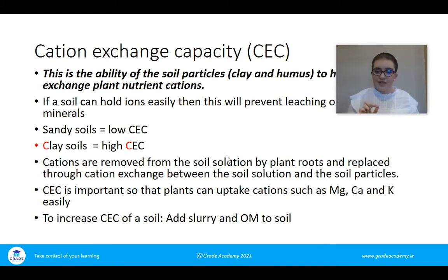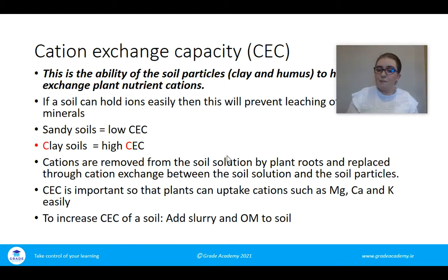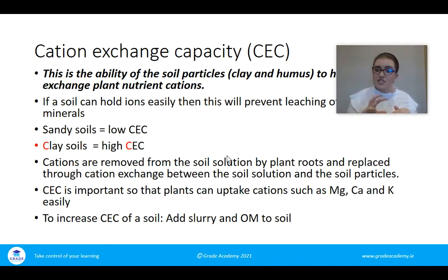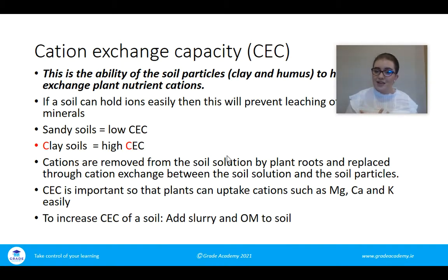Sand particles are not negatively charged, so they're not good at holding onto positive cations. When they can't hold onto cations there is more room for leaching if heavy rainfall occurs. Cations are removed from the soil solution by plant roots and replaced through cation exchange with the soil — there's constant movement of cations. With high clay content there will always be negative charges for positive cations to stick onto, whereas sandy soil has very little clay or humus, making cations more prone to leaching and harder for plants to absorb.